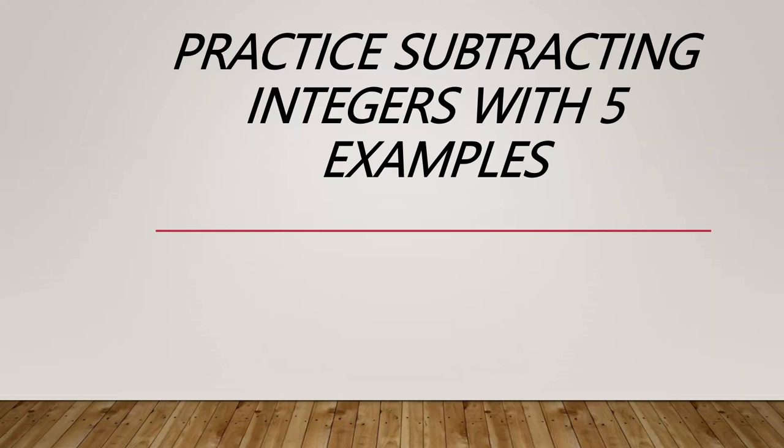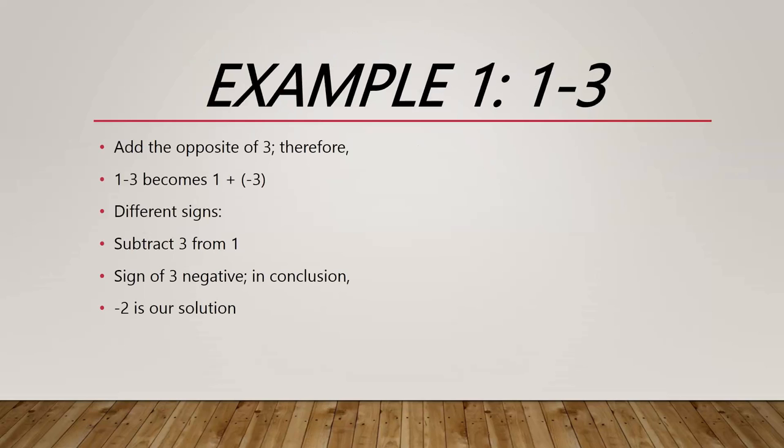Example number 1: 1 minus 3. In this case we have to add the opposite of 3 which will become negative 3, and we notice that we're in a situation in which the signs are different. So we subtract 3 from 1 and we notice that the larger number 3 has a negative sign.